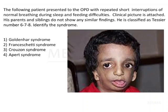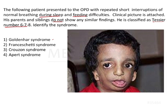The question: a patient presented to the OPD with repeated short interruptions of normal breathing during sleep and feeding difficulties. The clinical picture is attached. His parents and siblings do not show any similar findings, and he is classified as Tessier number 6, 7, 8. Identify the syndrome. The given options are Goldenhar syndrome, Franceschetti syndrome, Crouzon syndrome, and Apert syndrome.